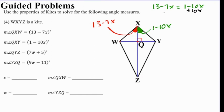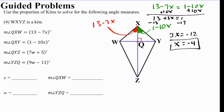If I add 10x to both sides, that gives me 13 plus 3x equals 1. And then I'll subtract 13 from both sides, and that gives us 3x equals negative 12, or x is equal to negative 4. And if we plug negative 4 in for x, we get 13 minus 7 times negative 4. The double negative means that we're going to get a positive. So it's 13 plus 28, which is 41 degrees. So our answer for x is negative 4, and our answer for angle QXW is 41 degrees.